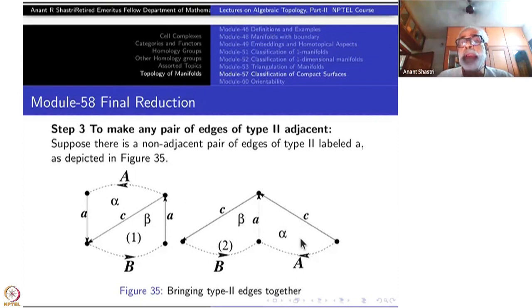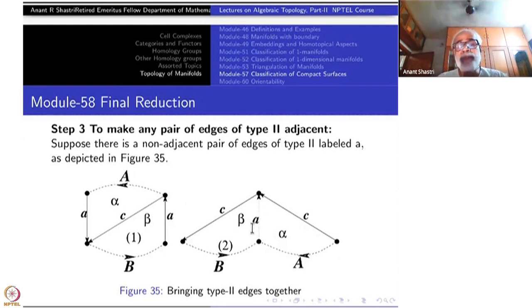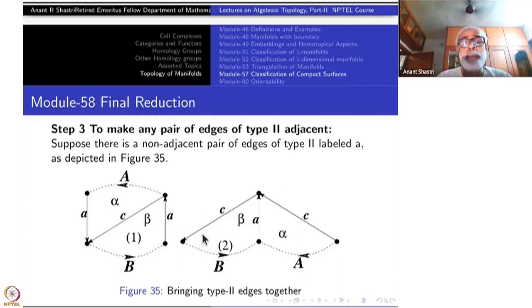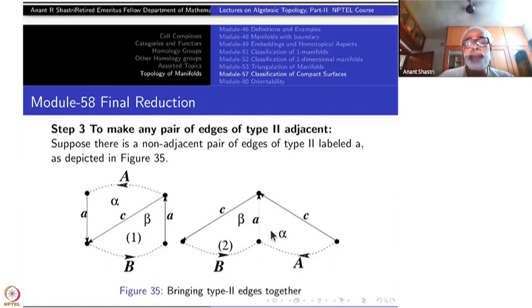The result may not be a convex polygon, but that is not a problem — all we need is the sequence, then we redraw it as a convex polygon. What has happened: the pair 'a, a' has disappeared, but a new edge 'c, c' of type 2 has appeared. We look at the rest of the sequence for any remaining non-adjacent type 2 pairs and repeat. Whatever has already been brought together will not be disturbed.